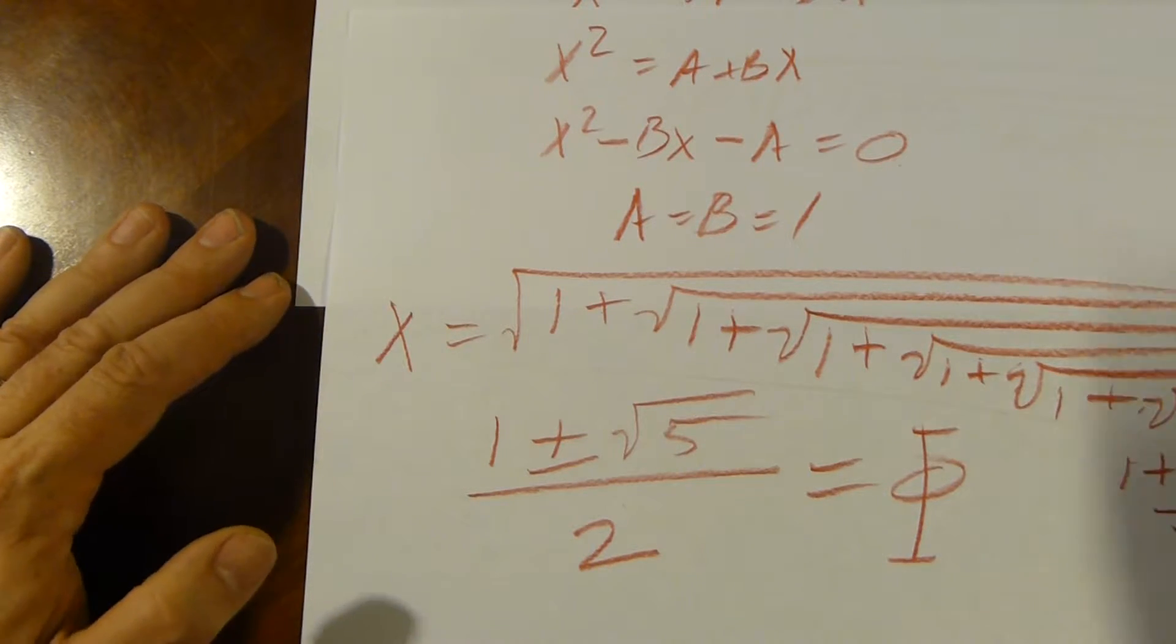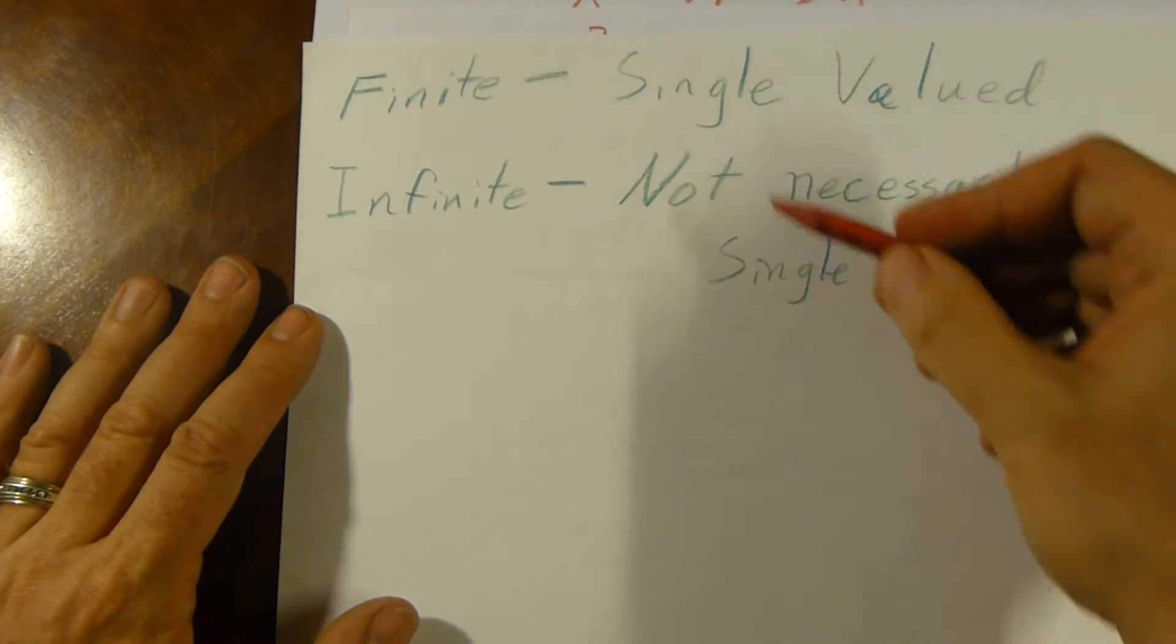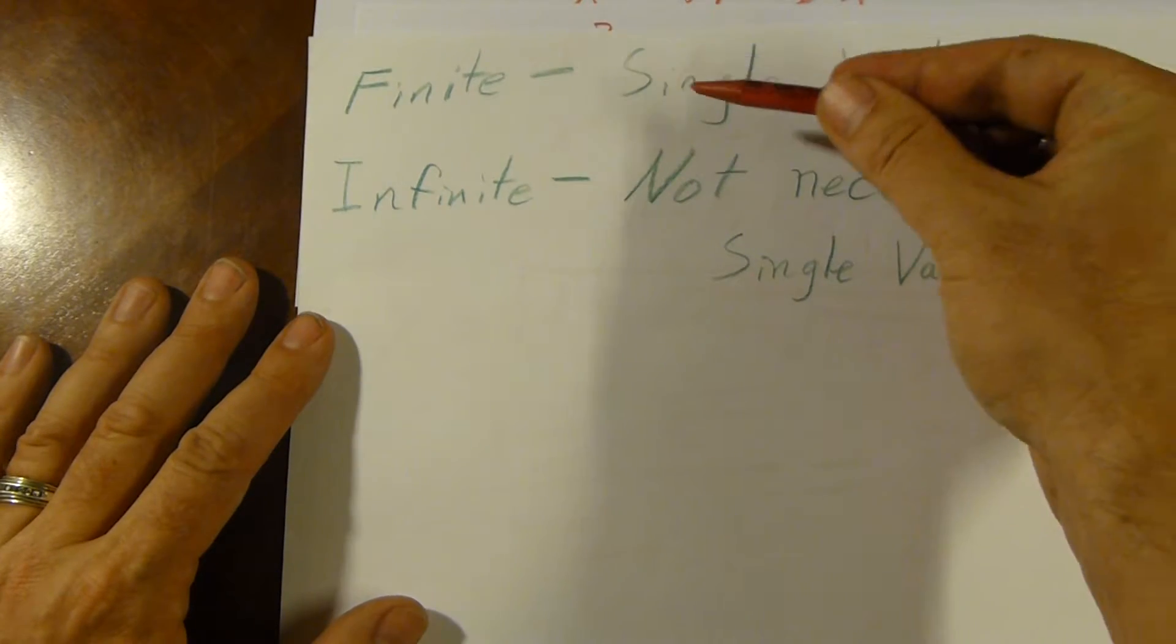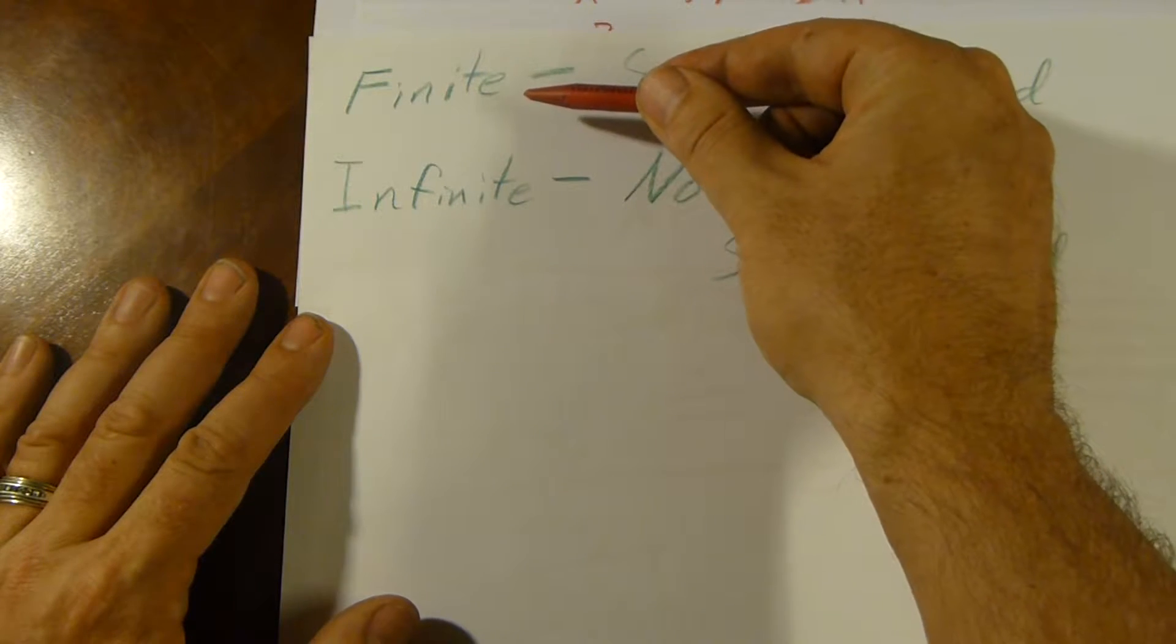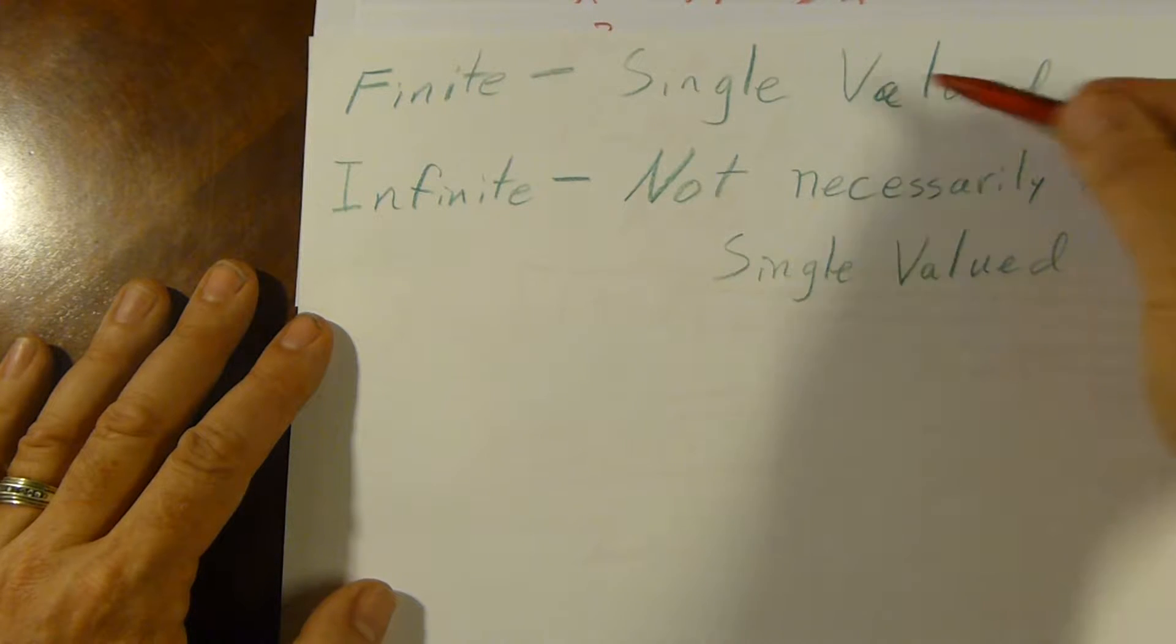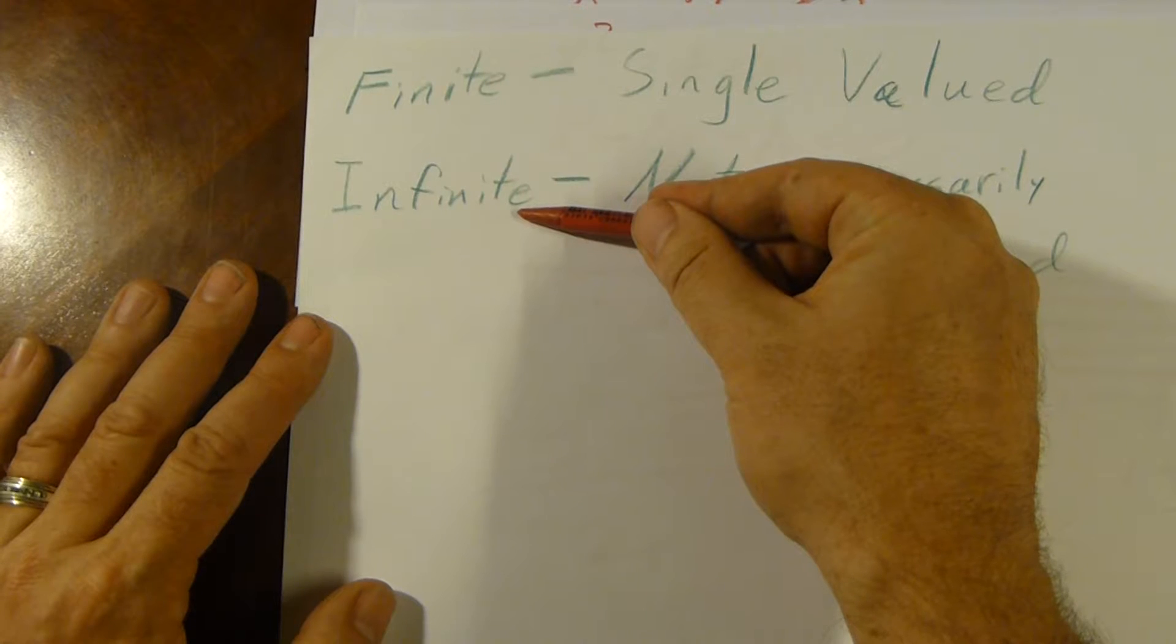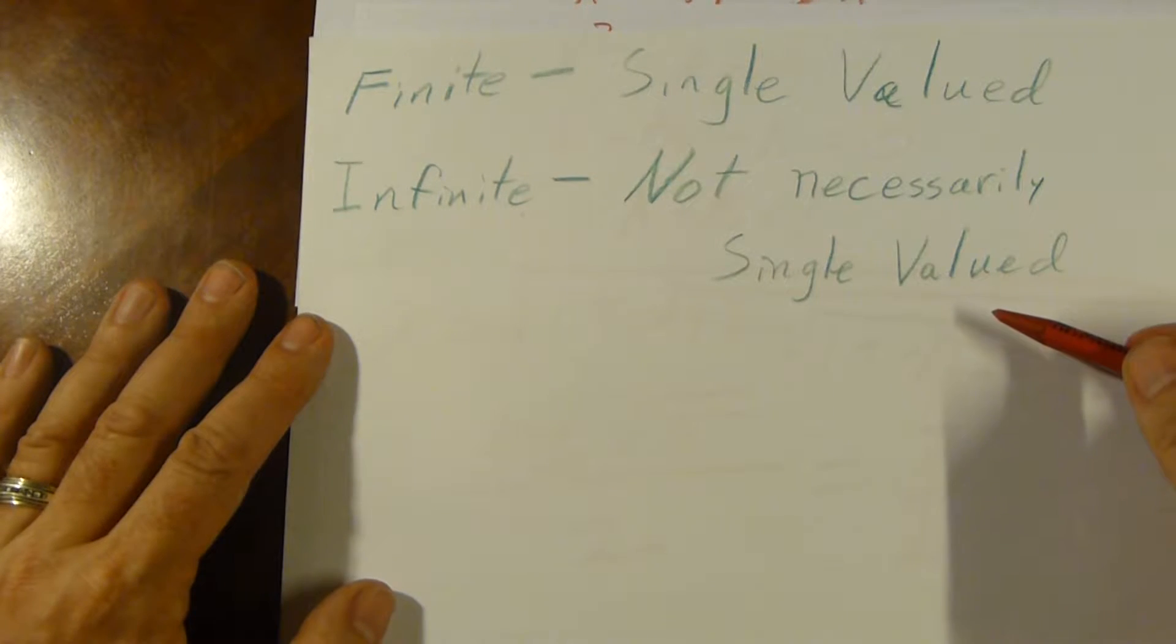As I talked about last time, when we have a finite number of radicals, or a finite number of continued fractions, we get a single value. That's basic algebra, nothing complicated. When we have an infinite amount, it's not algebra anymore. It's not necessarily single valued.